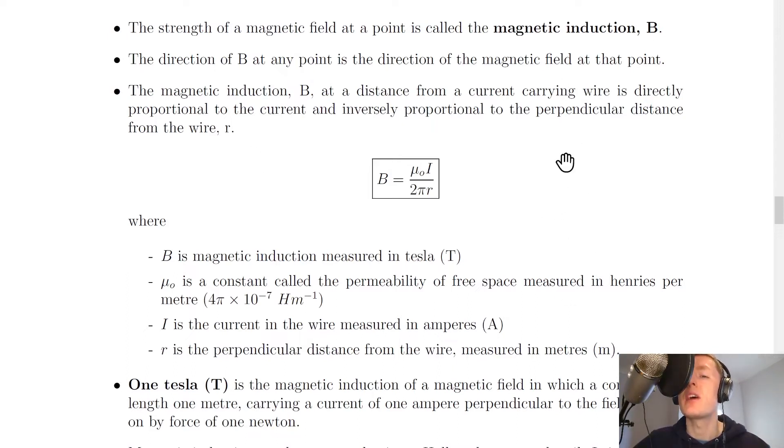If I had a vertical wire and my current was flowing from the bottom to the top, then we know from the left hand grip rule that the current should be flowing around it in this direction. What we mean by the perpendicular distance away from the wire is if we had this vertical wire, it's going to be a distance at right angles to that along in this direction.